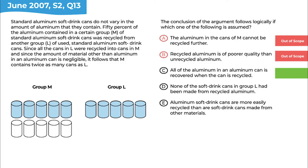Answer choice D says none of the soft drink cans in group L had been made from recycled aluminum. Whether or not group L was made from recycled aluminum doesn't tell us anything useful — as long as the material is then further recycled into group M, where it came from doesn't matter. Without more information, this does not guarantee that 100% of the material from group L will make it to group M, so D is out of scope. Answer choice E says aluminum soft drink cans are more easily recycled than soft drink cans made from other materials — how easily they recycle does not matter. With four out-of-scope answer choices, answer choice C is our answer.